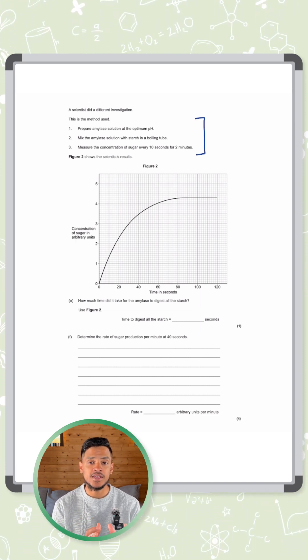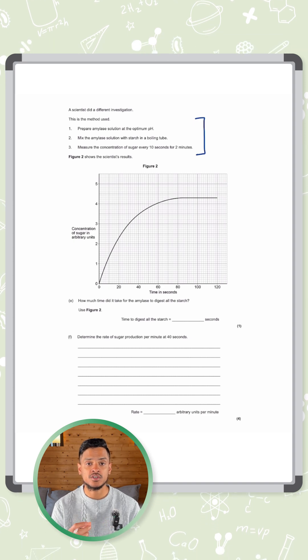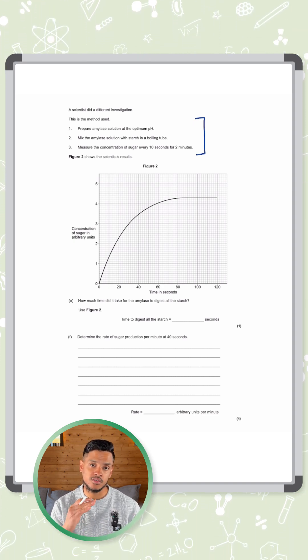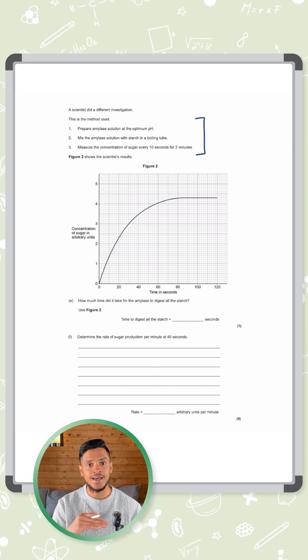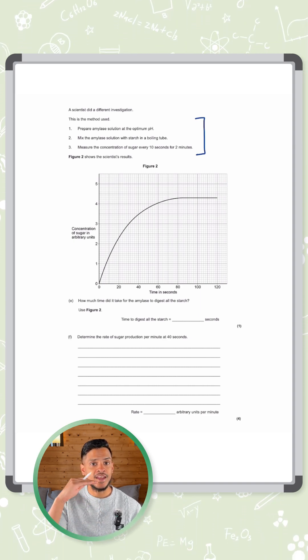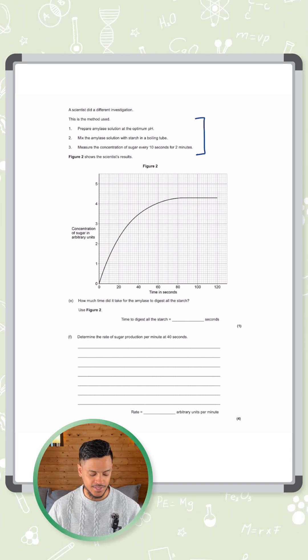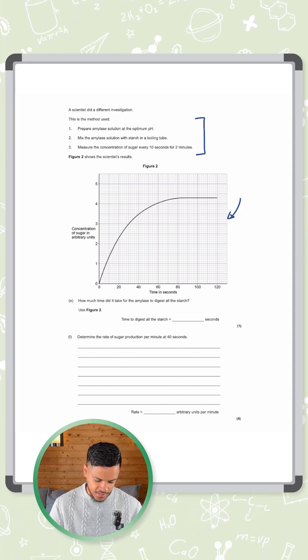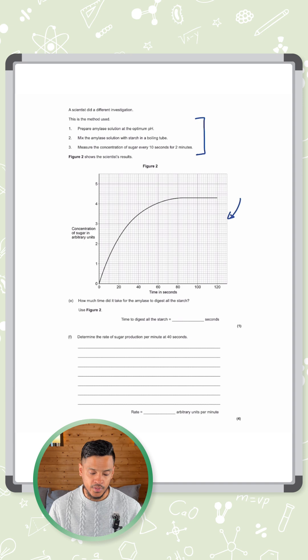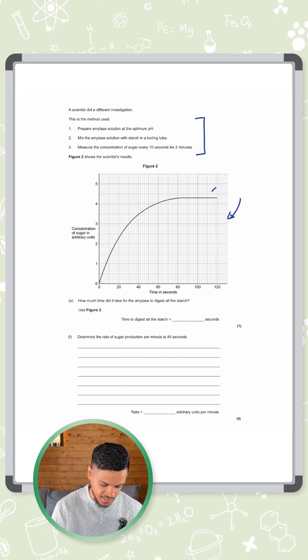Once the amylase starts working on the starch, sugar starts getting produced. So start off very low, you start with no sugar because it's all starch, and then as the starch gets broken down, the level of sugar will increase. That's what's shown in this graph here. We start off with zero and then it increases up with a curve. It eventually plateaus at the end here.